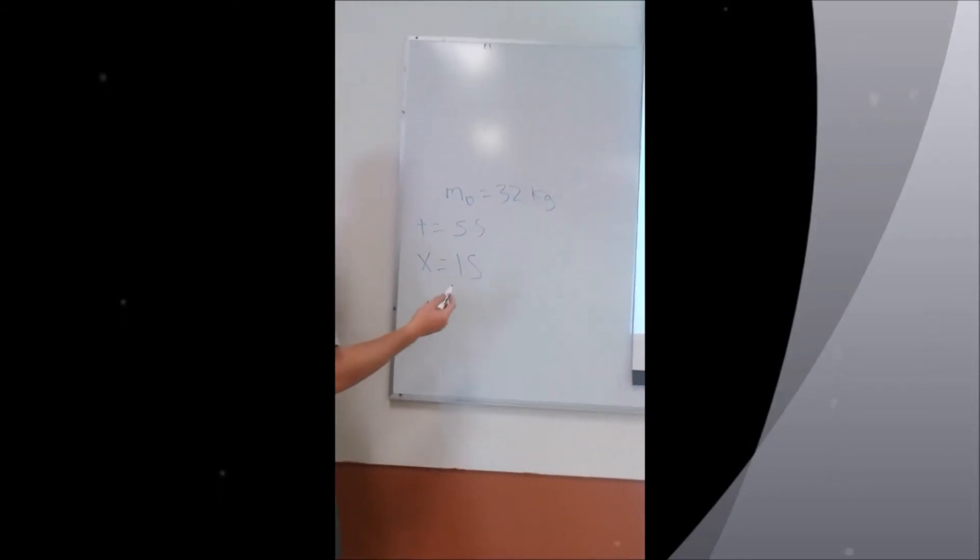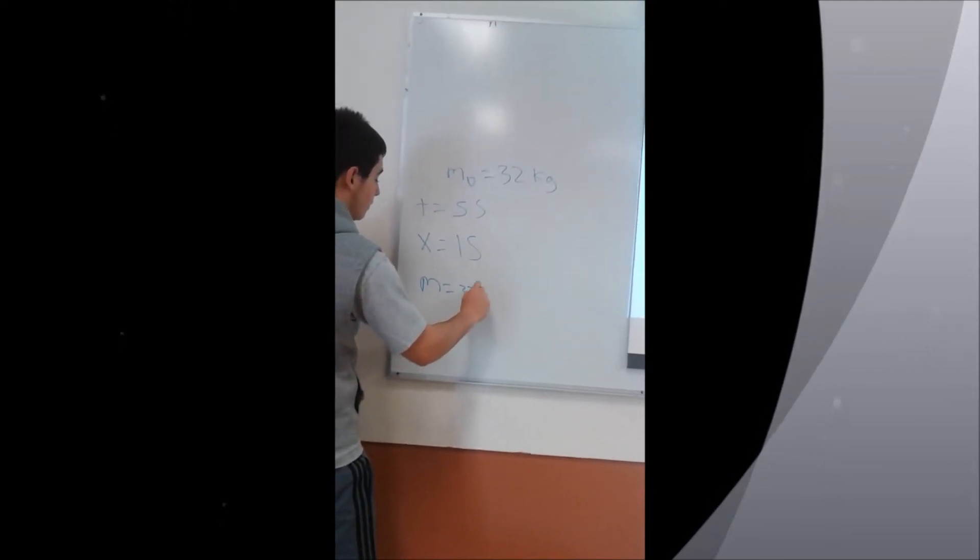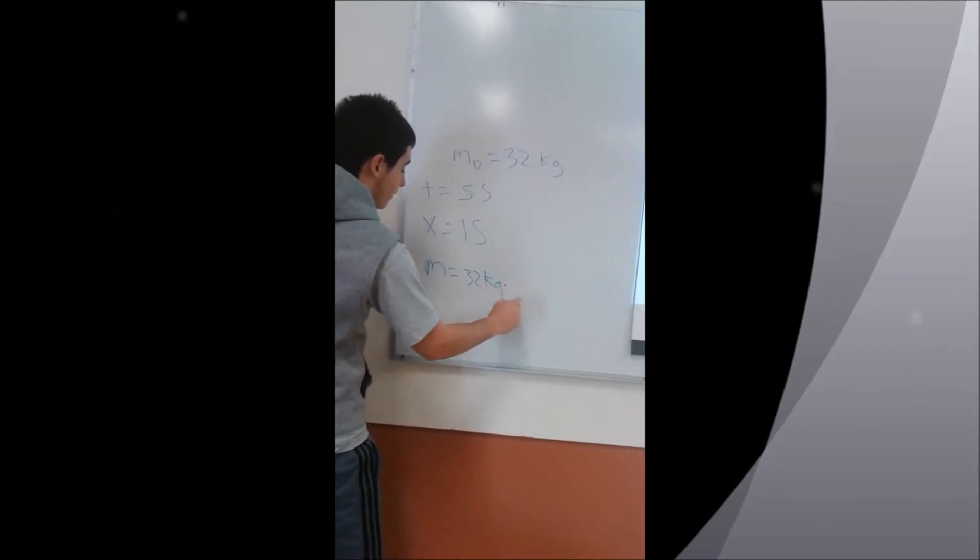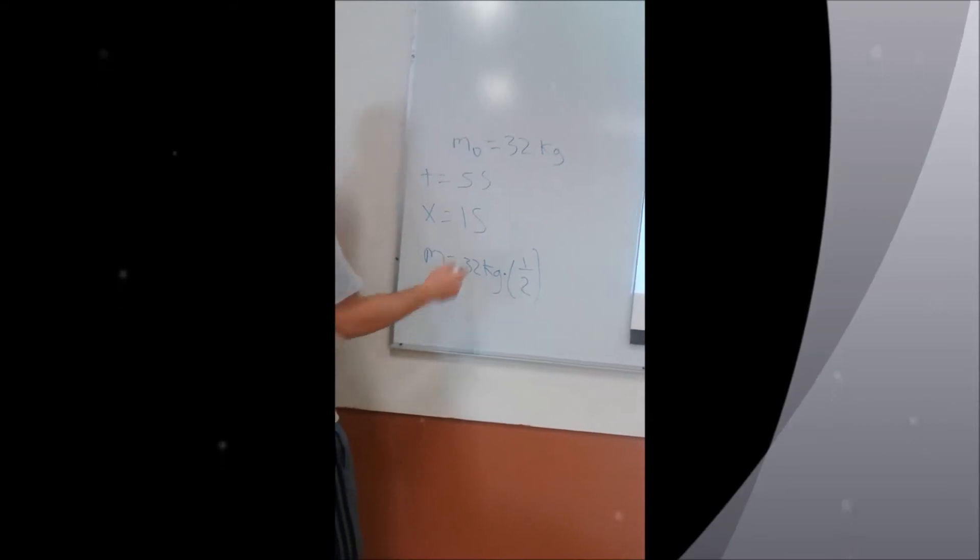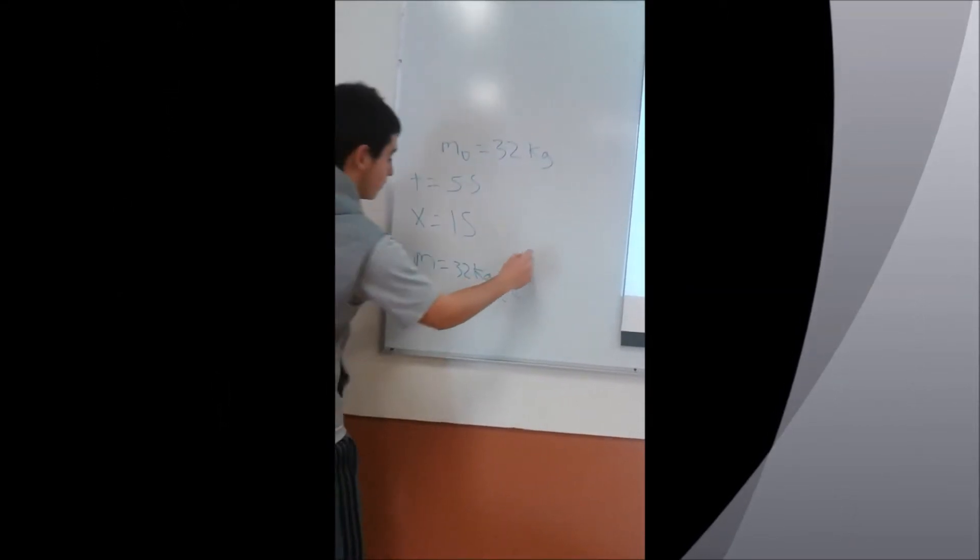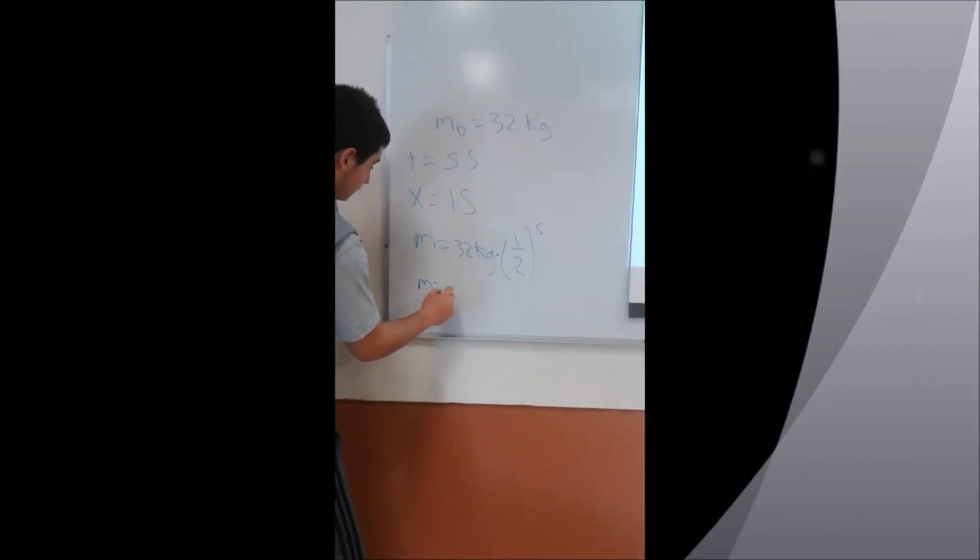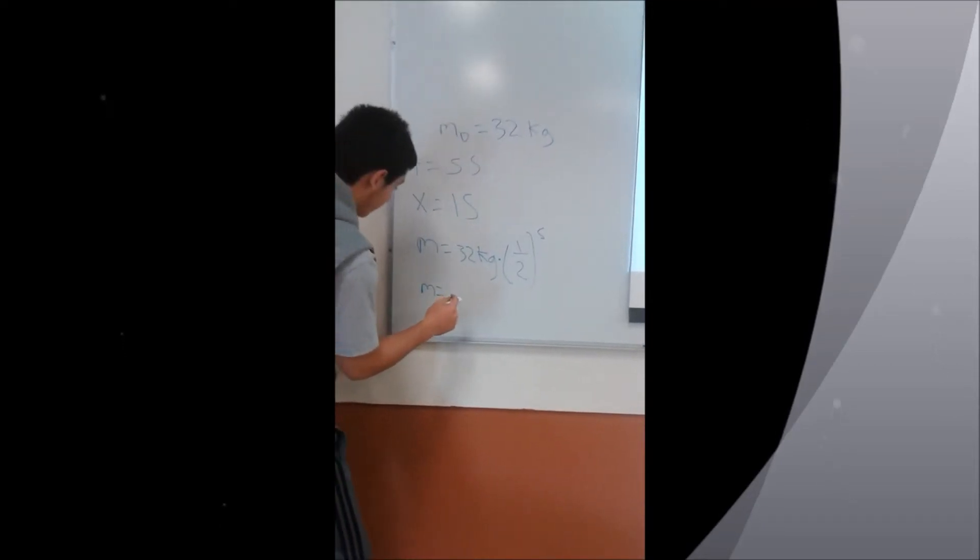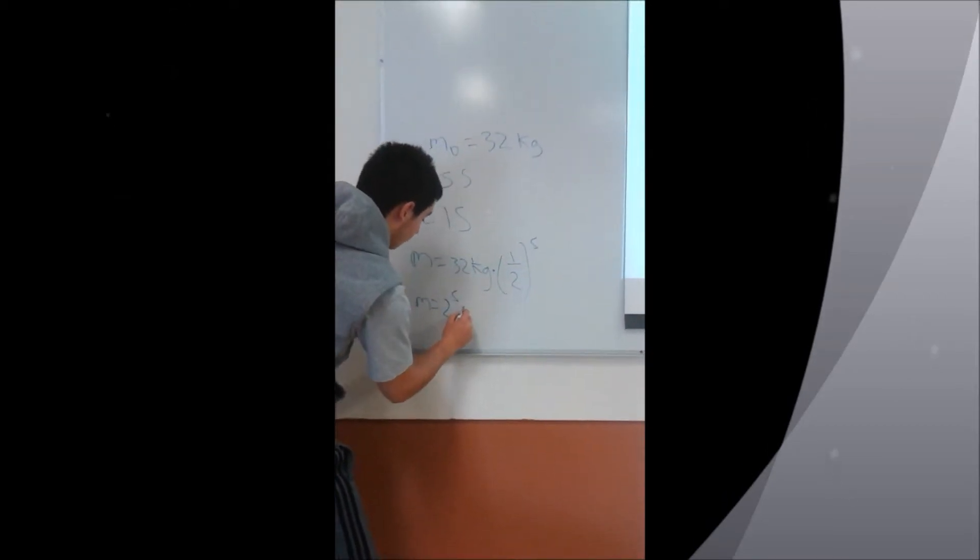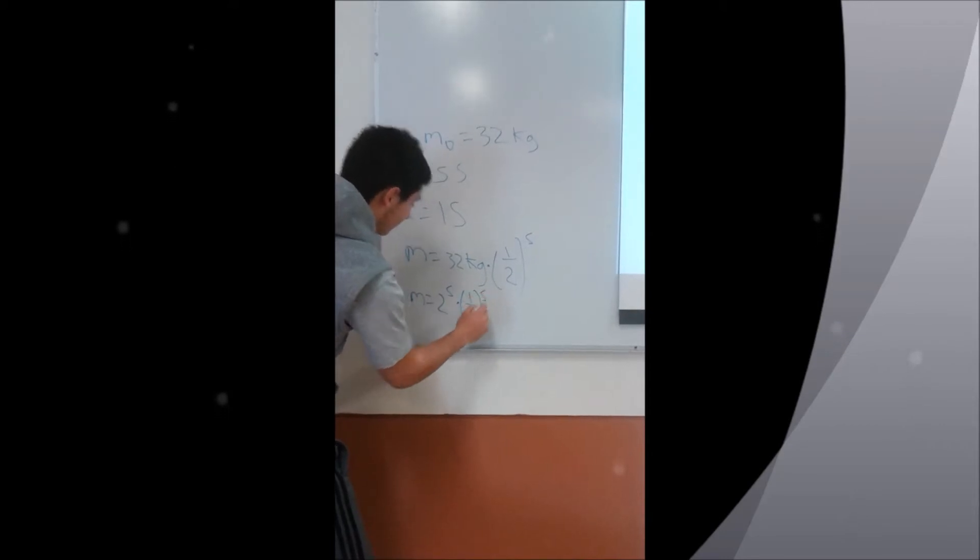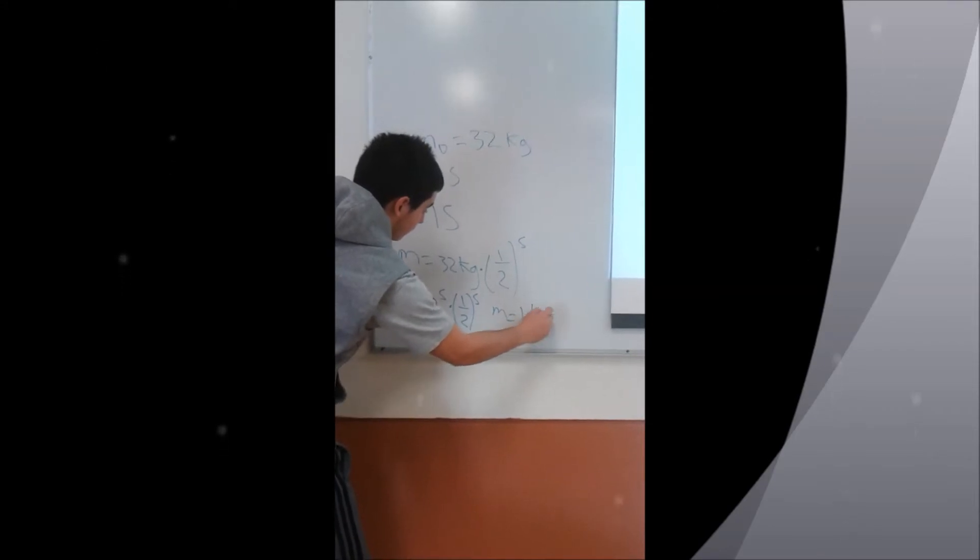Then, after 5 seconds, let's do the equation. So n is going to be equal to 32 total ns multiplied by 1 half to the 5 seconds over 1 second. That's just 5, right? So then the mass is going to be equal to 32. Well, that's just 2 to the 5, right? And 1 half to the 5.